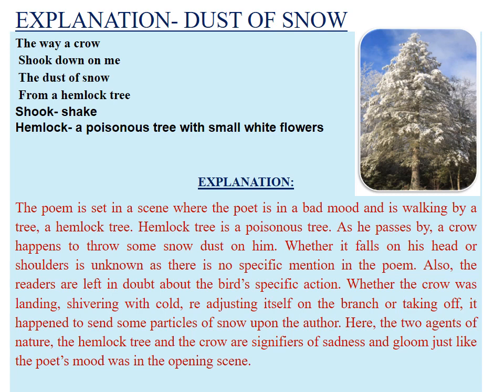The poem starts in a very dull and gloomy state. The tone is sad and depressing. The poem is set in a scene where the poet is in a bad mood and is walking by a hemlock tree, which is poisonous and has small white flowers. As he passes by, a crow happens to throw some snow dust on him. Whether it falls on his head or shoulders is unknown as there is no specific mention in the poem. The readers are also left in doubt about the bird's specific action — whether the crow was landing, shivering, casting itself on the branch, or taking off — it happened to send some particles of snow upon the poet.